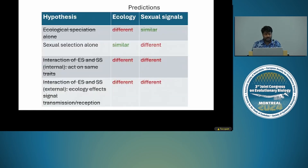I would say that ecology, in terms of traditional ecological variables, may have less to do with speciation in this system. Along with different sexual signals, we find that the ecology between these sympatric, reproductively isolated, closely related species is very similar. It seems like speciation by divergent sexual selection acting alone has the most support in our system.